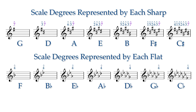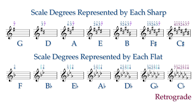If you examine the flat keys, the last flat is always scale degree 4, the penultimate flat is always the tonic, and the third flat from the end is always scale degree 5, and so on. If you write out the scale degrees for all of the sharps in C sharp major and all of the flats in C flat major, the two series of numbers will be retrograde of each other.